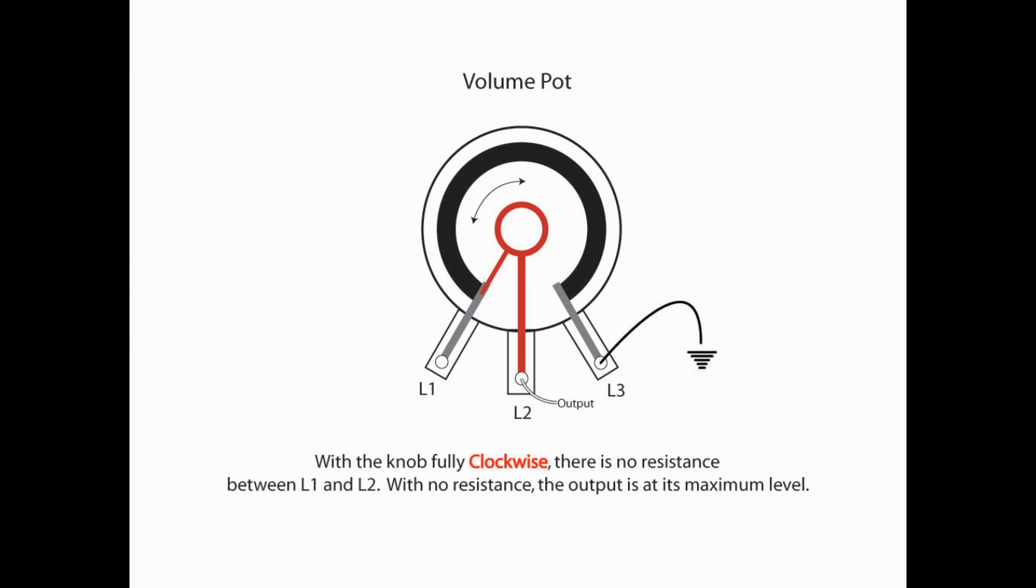When we turn the knob fully clockwise, meaning we've got it all the way open, we've got full volume, basically we have no resistance between L1 and L2. We are full bore. We've got all volume or output of those pickups coming out of that volume pot.